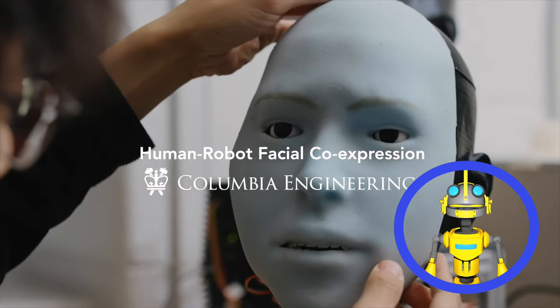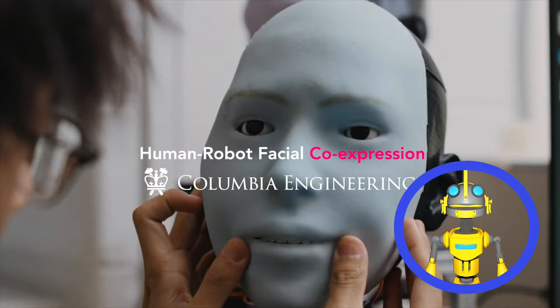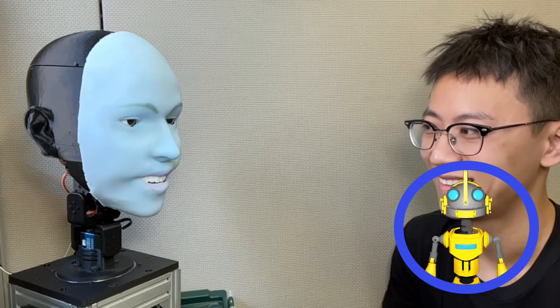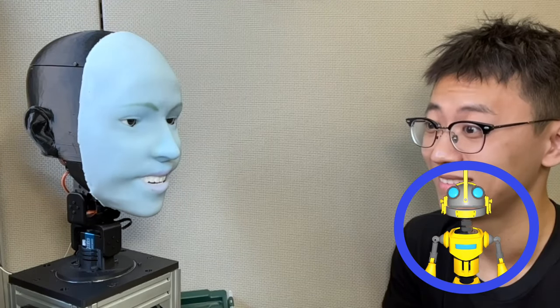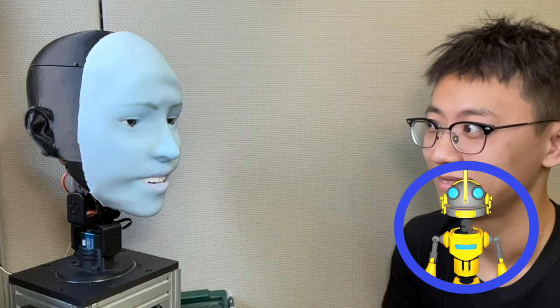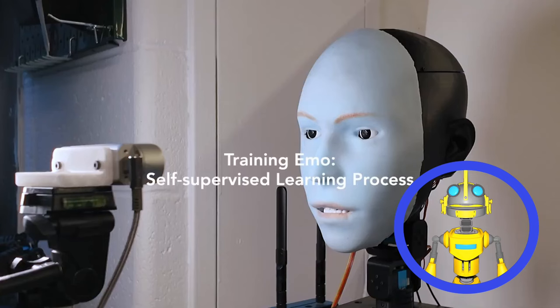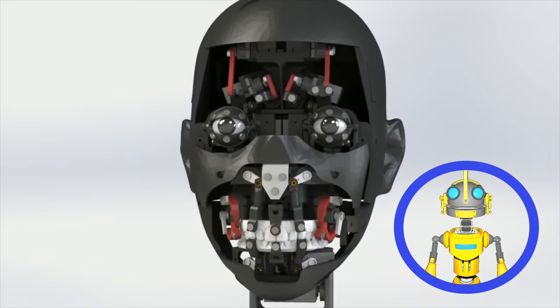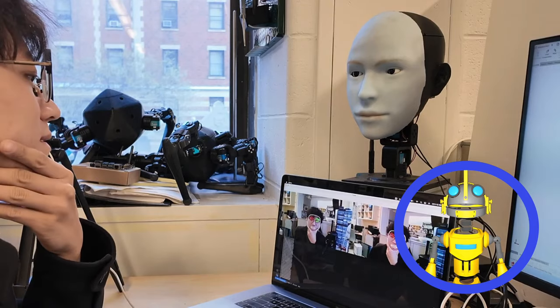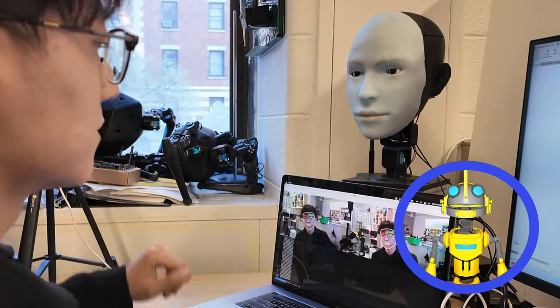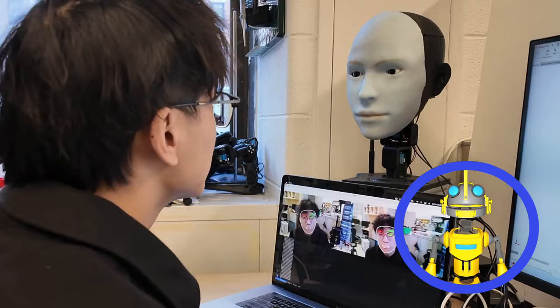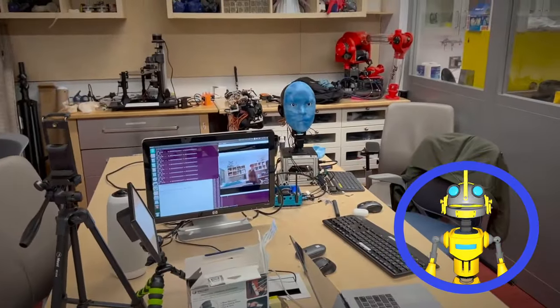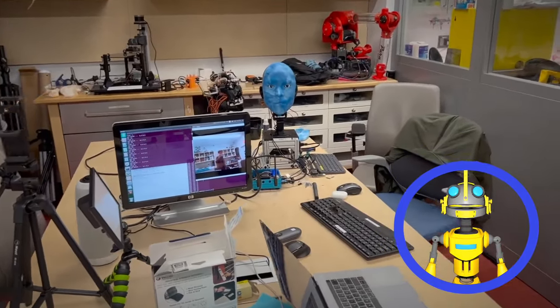researchers at Columbia University have developed EMO, a robot that can mimic human facial expressions with impressive speed and accuracy down to the millisecond. This feat is achieved through a combination of powerful AI models and sophisticated mechatronics. EMO can not only detect a meatbag smile,